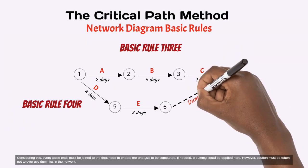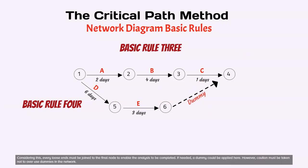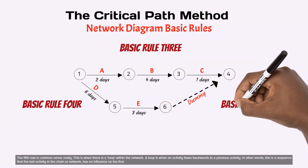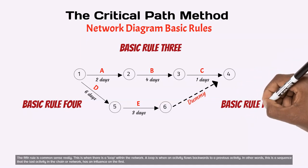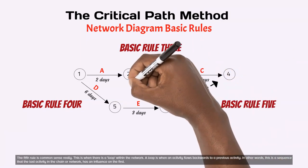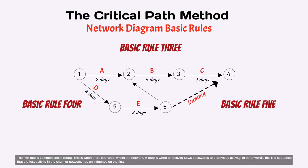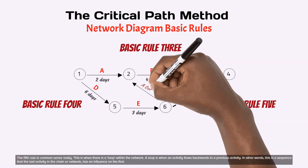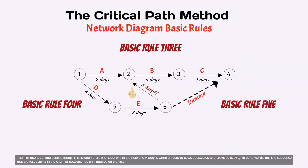However, caution must be taken not to overuse dummies in the network. The fifth rule is common sense really. This is when there is a loop within the network. A loop is when an activity flows backwards to a previous activity. In other words, this is a sequence where the last activity in the chain or network has an influence on the first. These are the five basic rules to drawing a network diagram. Feel free to pause the video here to memorize these rules.